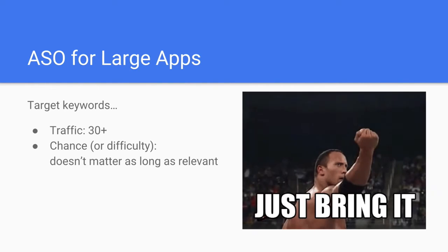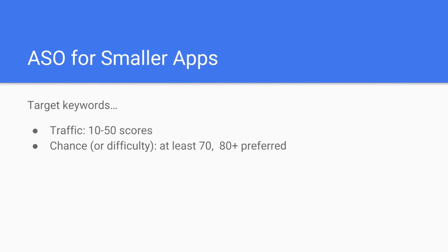Let's recap: the main thing is you want at least decent traffic. There's no point trying to rank for keywords that have a 5 traffic score on Mobile Action — even with a 100% chance you're going to rank well, you're just not going to get the downloads you want. So chance — difficulty or chance — is very, very important. At least a 70, but try to find keywords at 80 and above, because those become keywords you actually rank for.